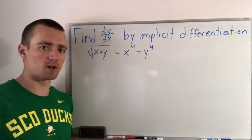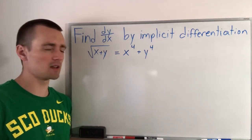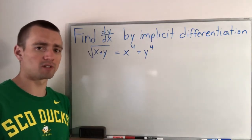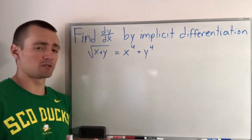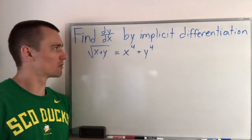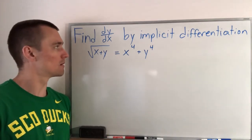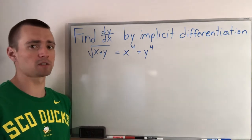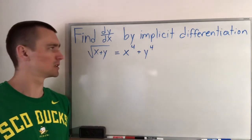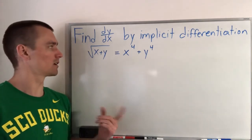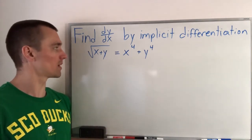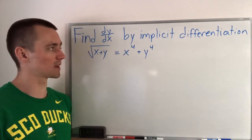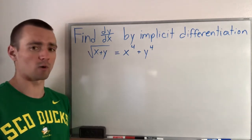Hey guys, Jake here, coming at you with some more maths today. Today we're going to be going over another implicit differentiation problem. Here's the problem we're going to be going over. All we're doing really is just to find dy/dx by implicit differentiation, and we are given that the square root of x plus y equals x to the fourth plus y to the fourth.